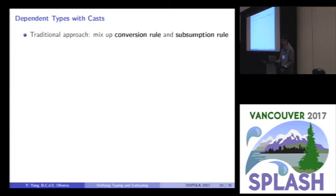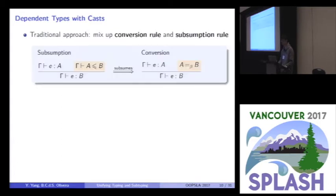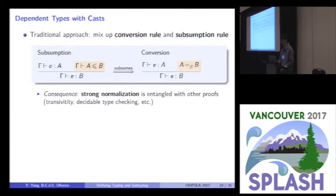And we find that another complexity of the old approach is that, normally, conversion rule and subsumption rule are mixed up in such systems. For example, the left subsumption rule subsumes the right conversion rule, because the subtyping relation subsumes beta conversion here. An unfortunate consequence is that the strong normalization is entangled with some other proofs, like transitivity of subtyping, or decidability of type checking. That makes the meta theory hard to prove.